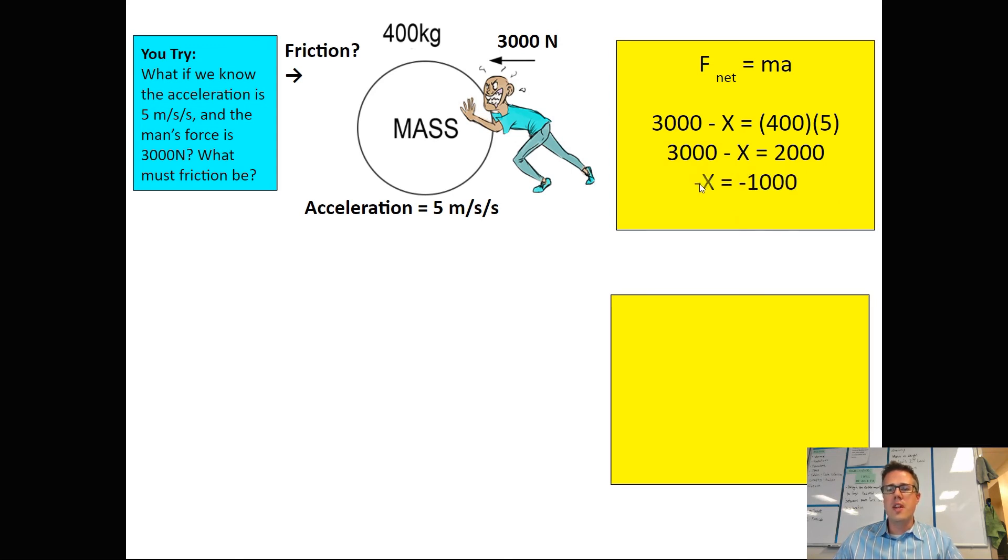Remember, these negatives, if you divide everything on both sides by a negative one, everything will turn positive. It's one of the rules in algebra. So x is 1000 newtons, and this friction had to be pushing against him. So 1000 newtons to the right, since he was pushing to the left.